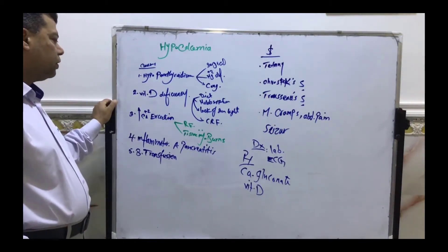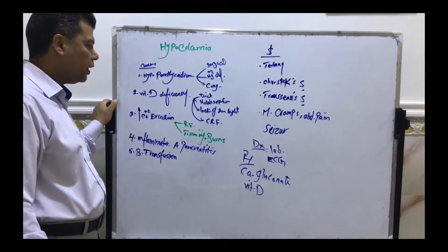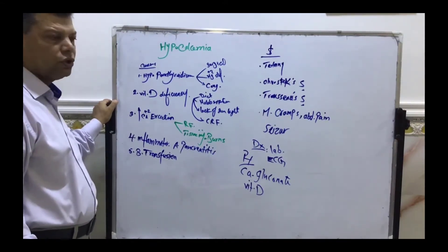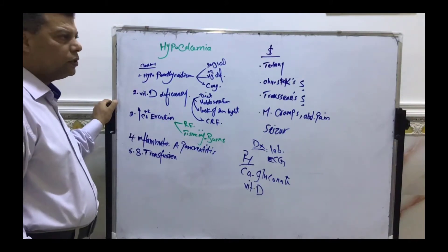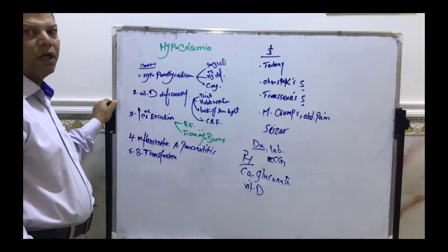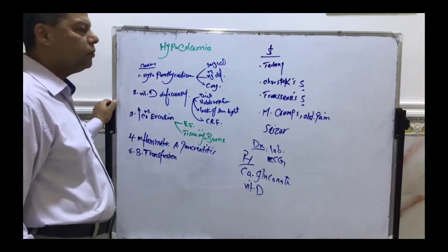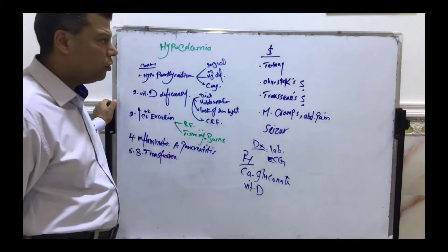Fourth, inflammatory conditions like acute pancreatitis, in which the free calcium ions combine with free fatty acids in a saponification process. This will decrease the level of calcium.